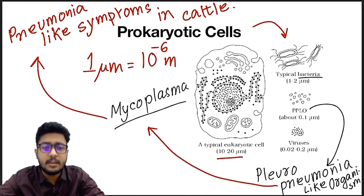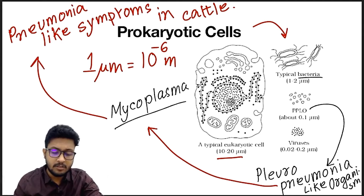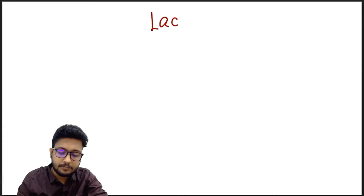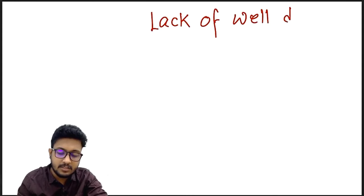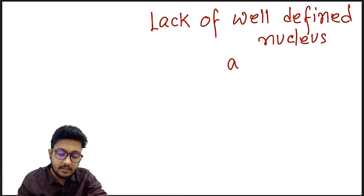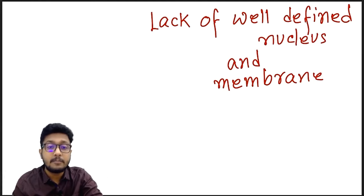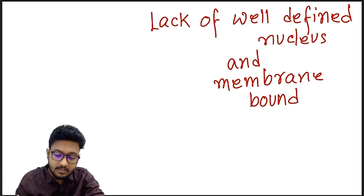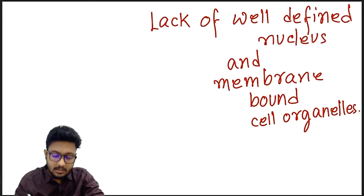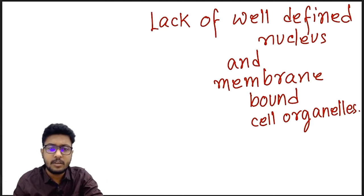The most important feature that distinguishes prokaryotic cells from eukaryotic cells is the lack of a well-defined nucleus and membrane-bound cell organelles. Membrane-less cell organelles may be present, but membrane-containing cell organelles are absent. This property differentiates prokaryotic cells from eukaryotic cells.